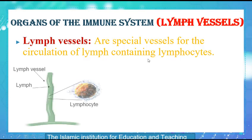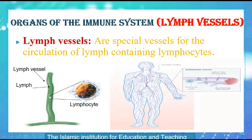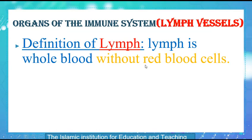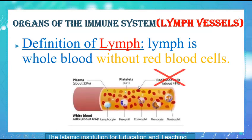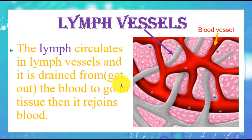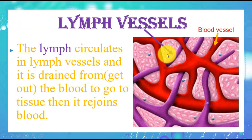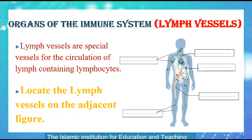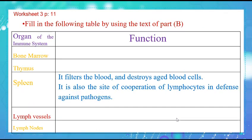Lymph vessels are special vessels for the circulation of lymph containing lymphocytes. The lymphatic vessels are everywhere inside our body. Lymph is the whole blood without red blood cells. The lymph circulates in lymph vessels and is drained from the blood to go to tissue, then it rejoins the blood. Please locate the lymph vessels on the adjacent figure, then open your worksheets, page 11, and complete the table with the role of the lymph vessels.